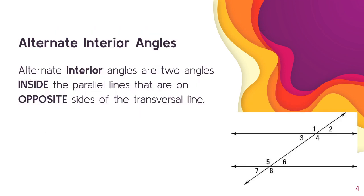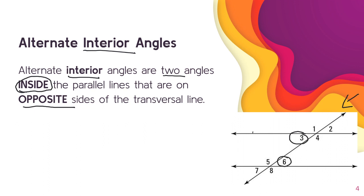Alternate interior angles are two angles inside the parallel lines that are on opposite sides of the transversal line. Remember, the transversal line is the line that cuts through. Interior means they're going to be inside. So if I look at angle 3, the alternate interior angle of angle 3 would be angle 6, because they need to be on opposite sides of the transversal line. So example 1 would be angle 3 and angle 6 — those would be alternate interior angles. There's one more example here; tell me what it is.